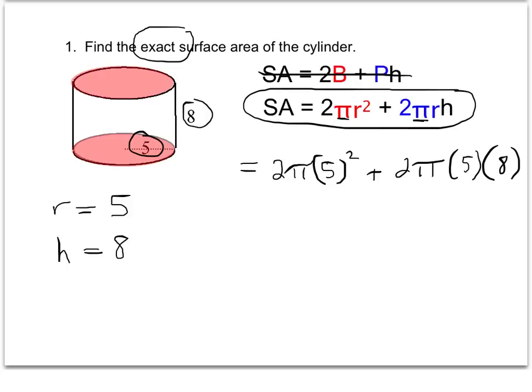This is the part to be careful of simplifying. We'll simplify each of these separately and then add them together. 2 times π times 5 squared - we square that first.